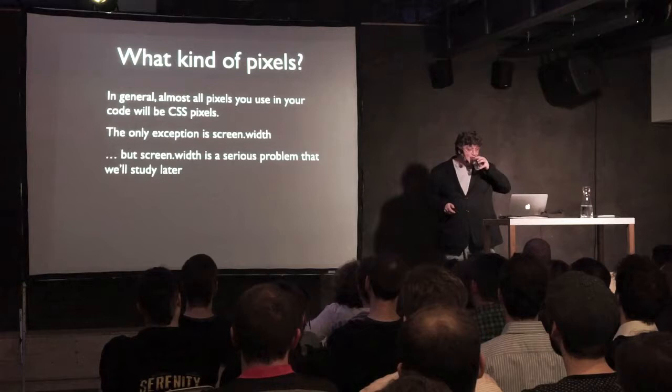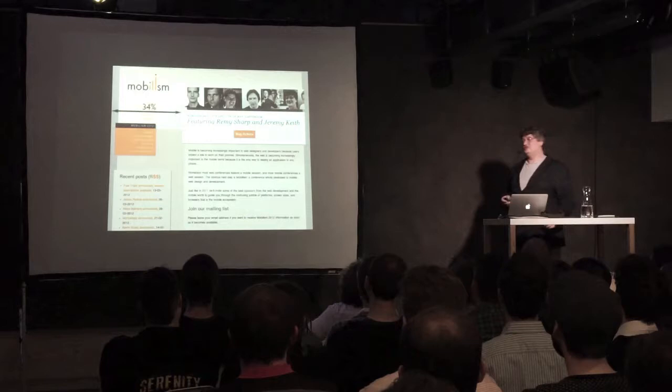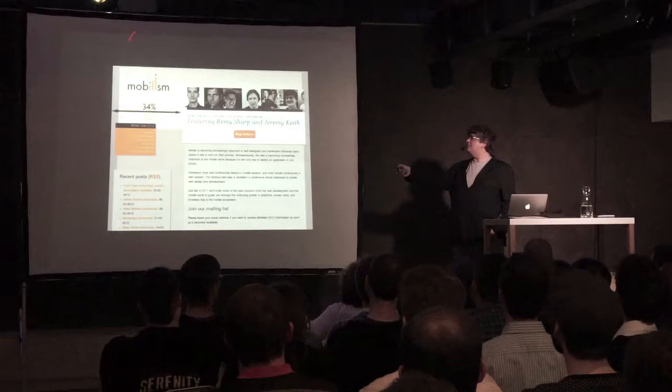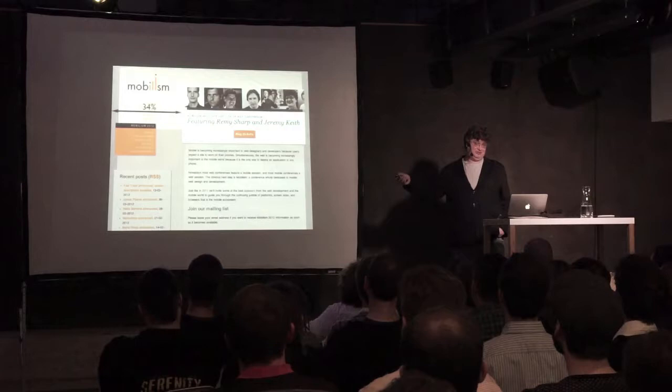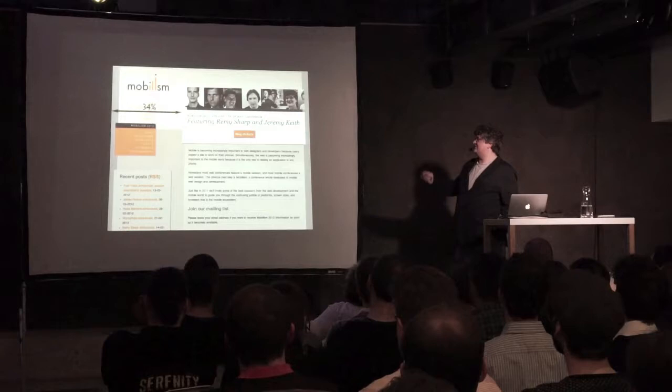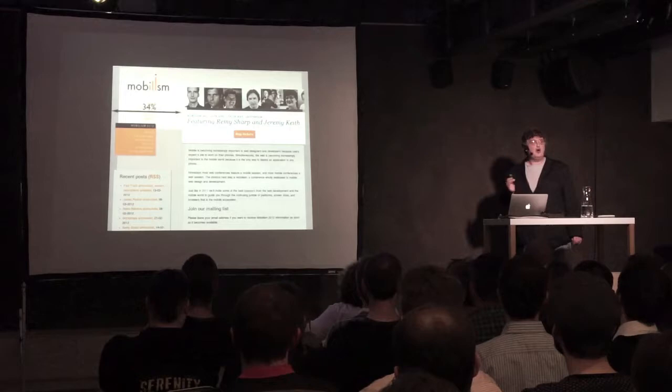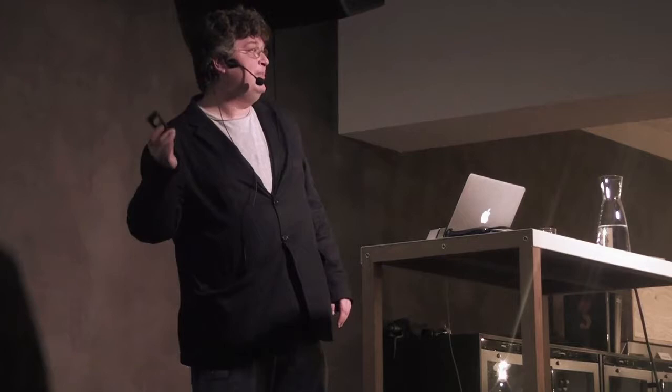With that introduction out of the way, let's go to the actual viewports. Our example site has a container div with a padding-left of 34%, so the main content takes only 66% of the screen. Here's a little CSS trick: as soon as you see a percentage in CSS, always ask yourself — percentage of what? So: 34% of what? You all know the answer — it's 34% of the browser window. But why?